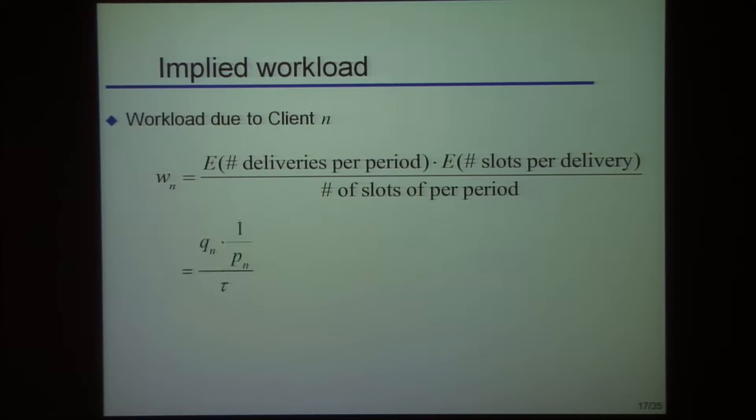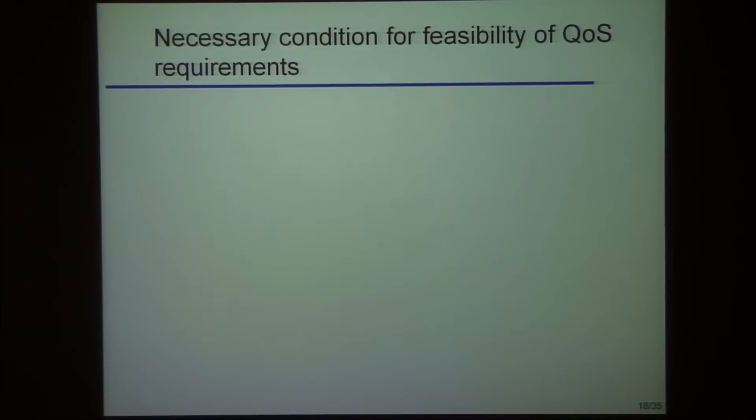You can calculate the workload that each client brings to the access point. It's basically the percentage of time slots needed by that client to keep that client happy. Now clearly a necessary condition is that the total workload should be less than one - common sense, also called queuing theory. Is it sufficient? And the answer is no.